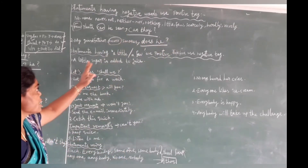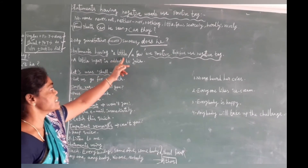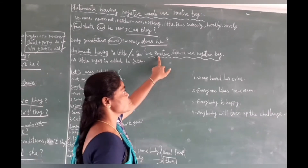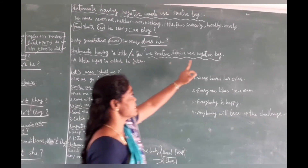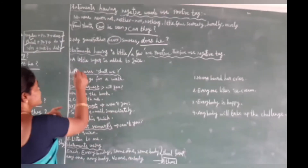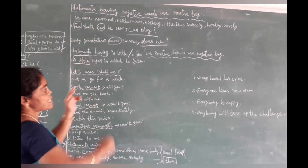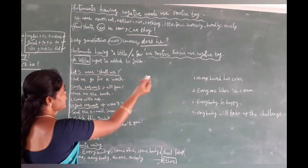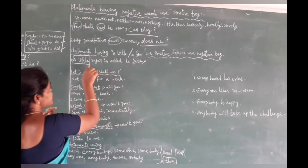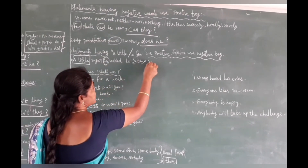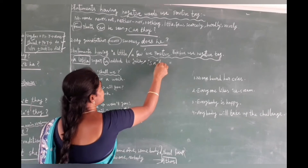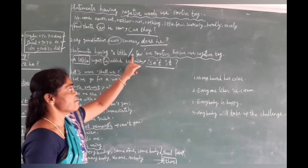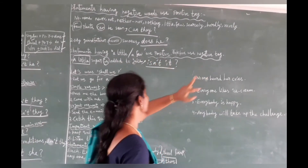Remember: when negative words like 'nothing', 'few', 'little', 'never', 'no' appear in a statement, it takes a positive tag. Also, 'a little' is positive — it takes a negative tag. But 'little' alone is negative — it takes a positive tag. So for a statement with 'little', the tag would be positive, for example: 'is it?'